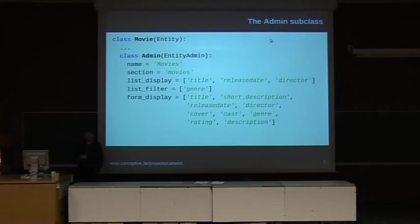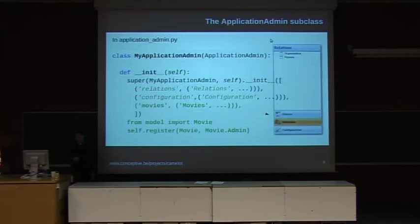So once we've defined our model, we will define how to visualize it. This is done by adding an admin inner class to your movie class. This admin inner class extends the entity admin class, and the admin class is a Camelot base class which says how your entity class should be visualized in the application. So here we say that it should be present in the movies section, and we have the list display attributes which specifies which fields should be visible if you see a list of movie objects. And then we have the form display attribute, which is a list of fields that should be present on the form.